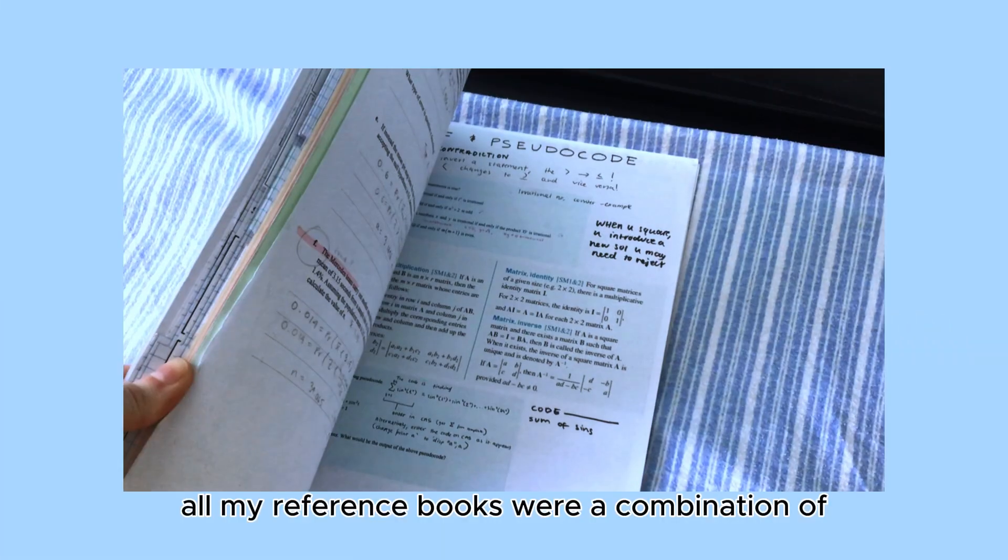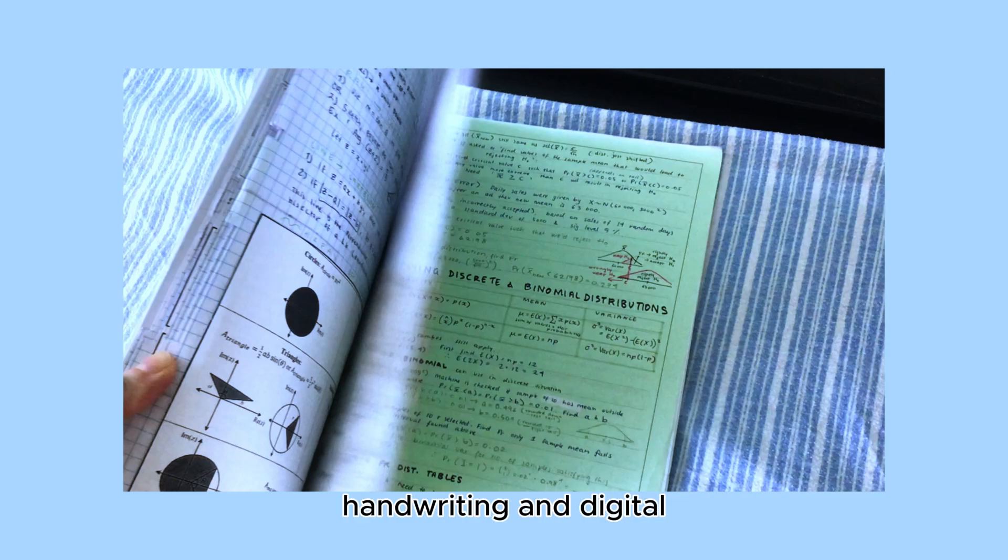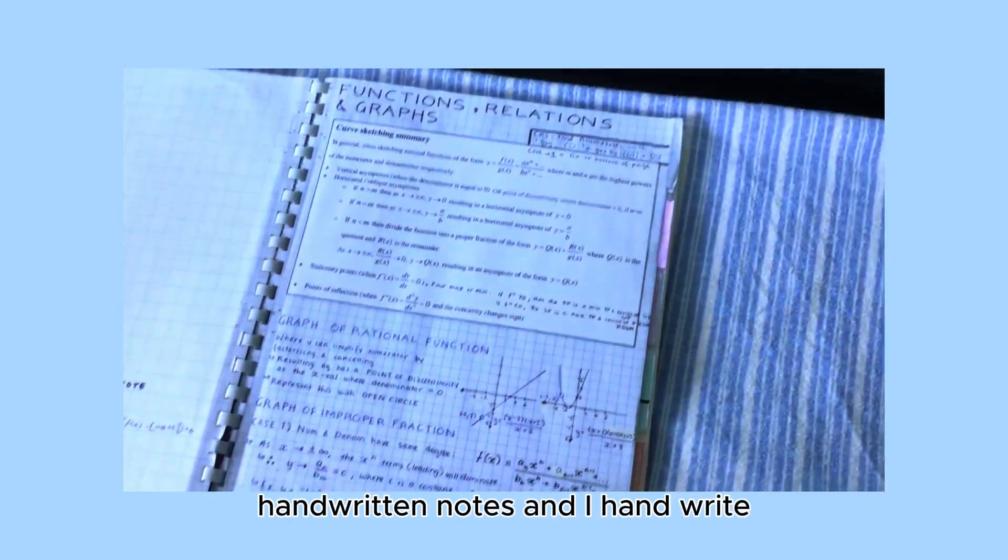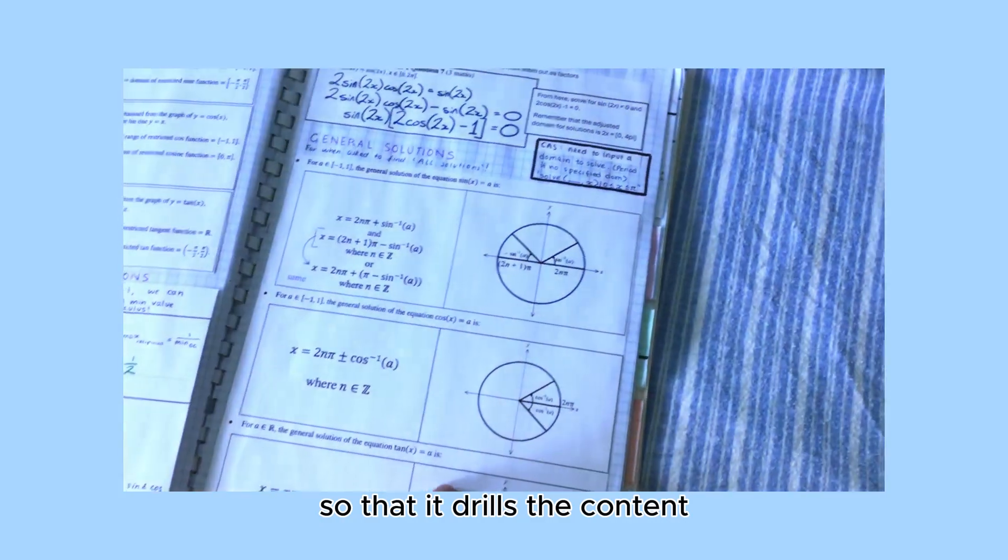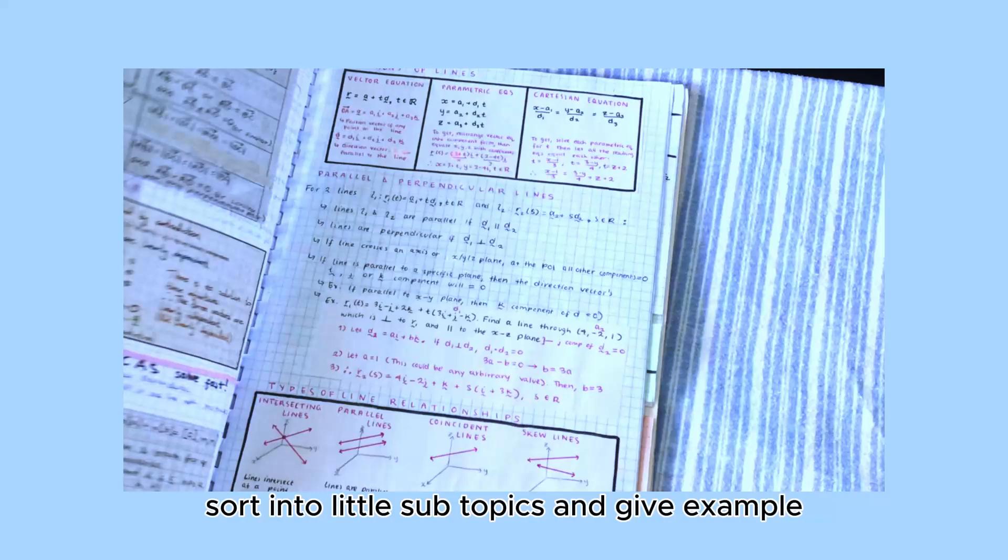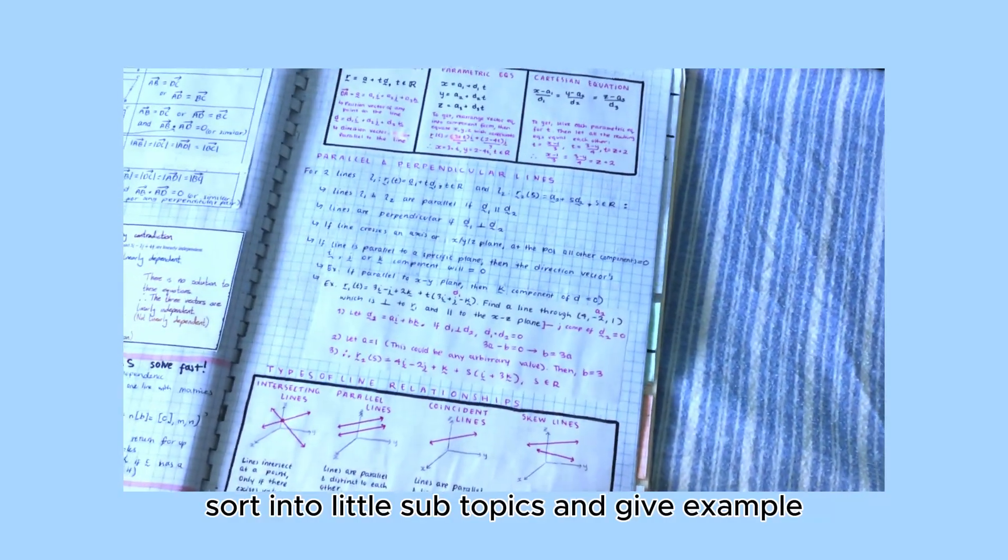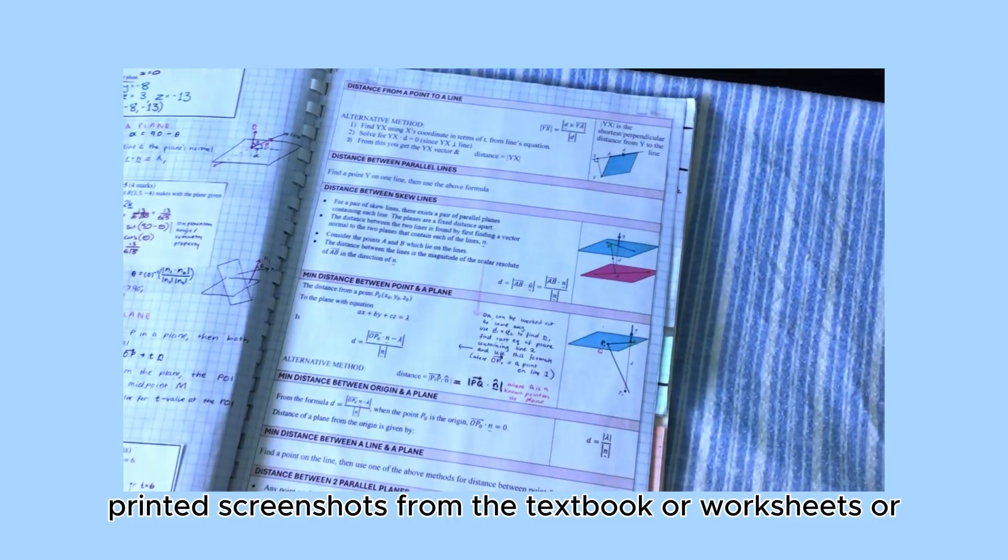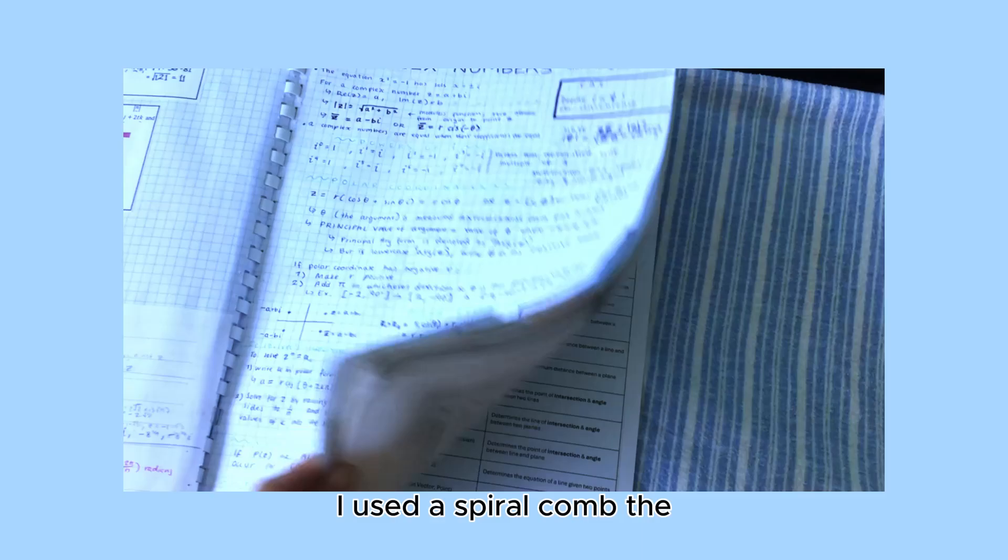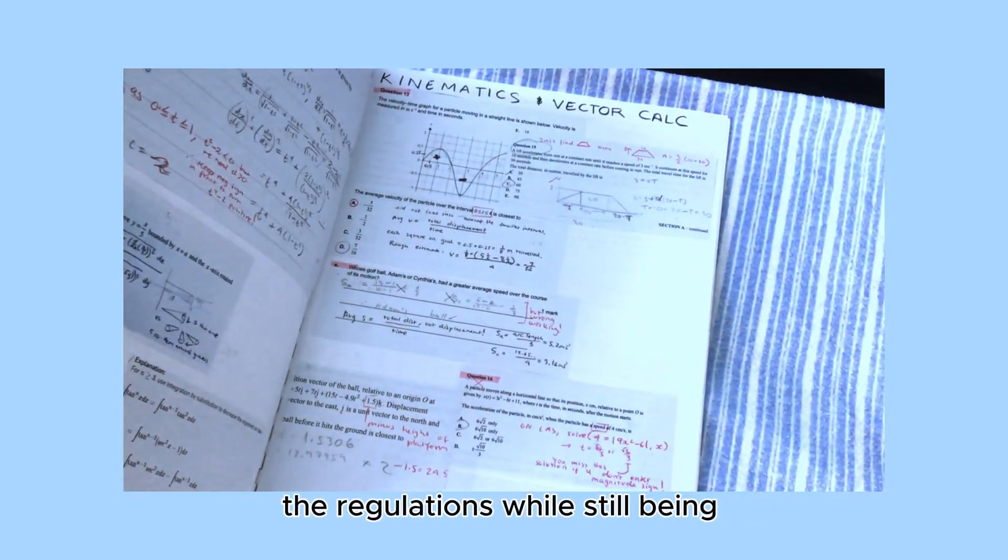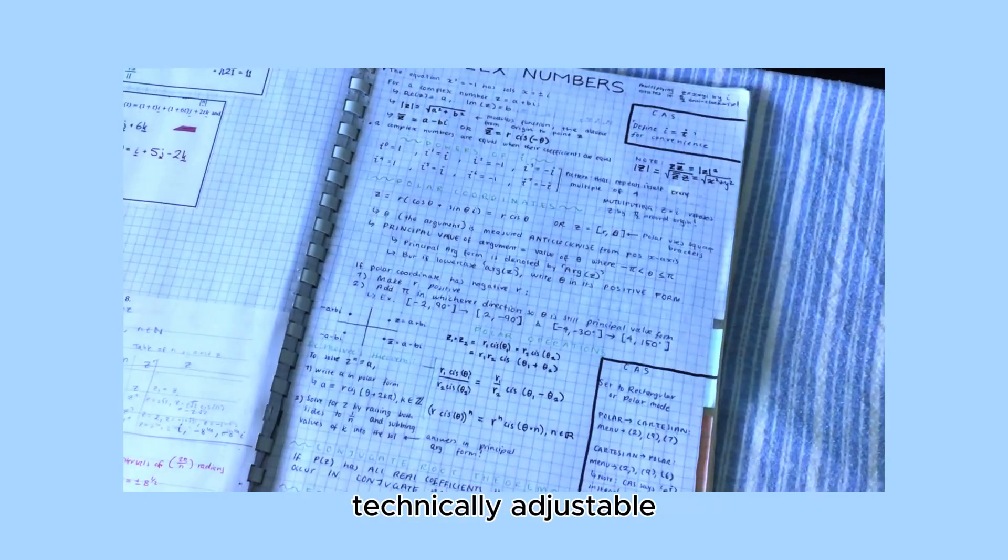All my reference books were a combination of handwriting and digital. First, for each chapter I handwritten notes, and I handwrite so that it drills the content and the concepts into my brain. Then the next few pages after, I sort into little subtopics and give example worked questions, whether that was printed screenshots from the textbook or worksheets or what I just cut and pasted. I used a spiral curve. The advantage of that is that it still meets the regulations while still being technically adjustable.